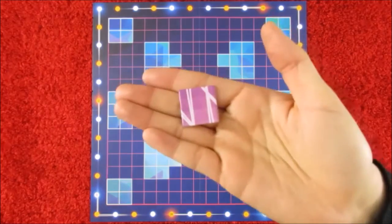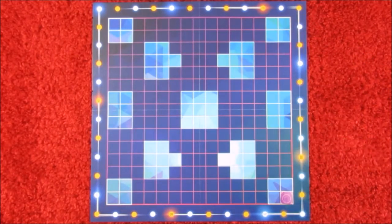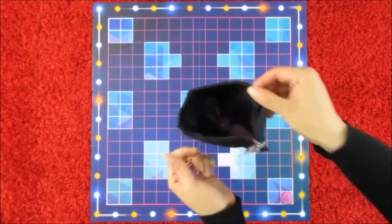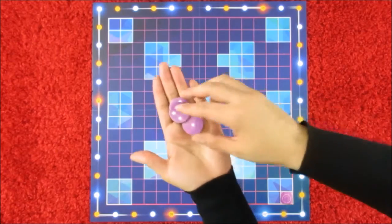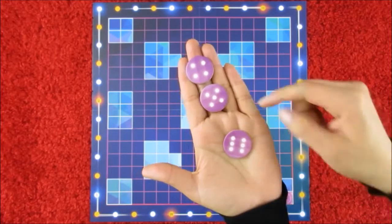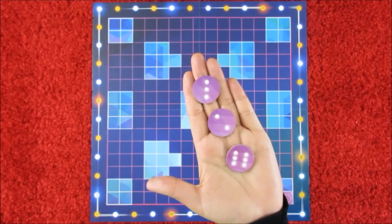Every player is also going to have an extra marker in order to track their points along the edge of the board. Every player is also going to get a sack of tokens inside, and these tokens, there's three different types, and they're double-sided. So this one token will have a six, a five will have a two, and a four will have a three on the other side.